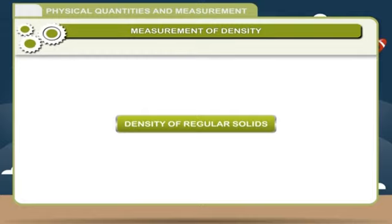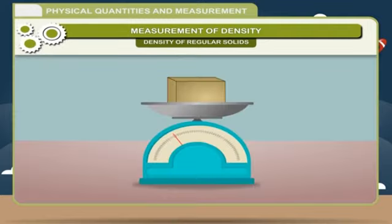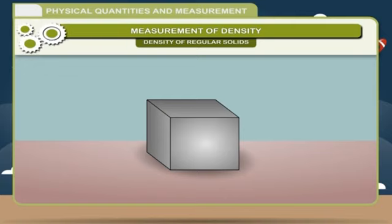Density of a regular solid: The density of a solid can be measured by finding its mass and volume. The mass M of a substance is obtained by weighing it with a beam balance or physical balance. The volume V of a regular-shaped object is calculated from its dimensions. Knowing the mass and volume, we can calculate density using ρ = M / V.